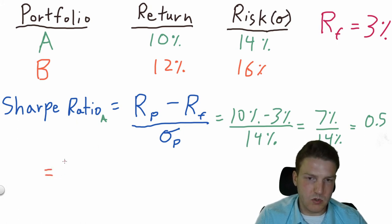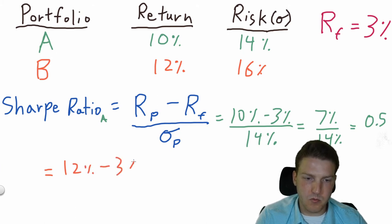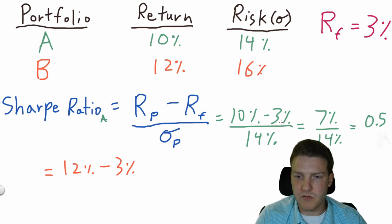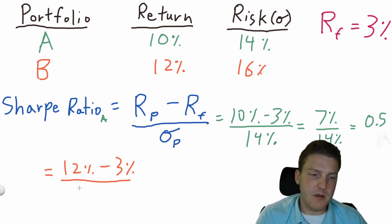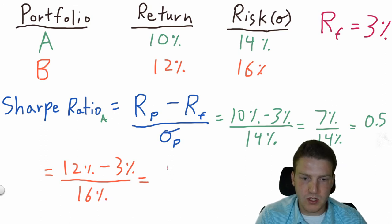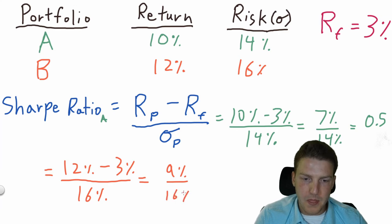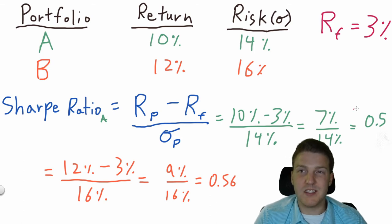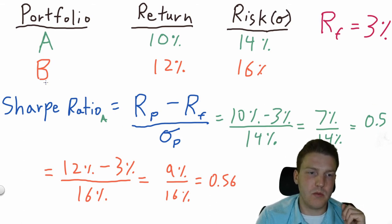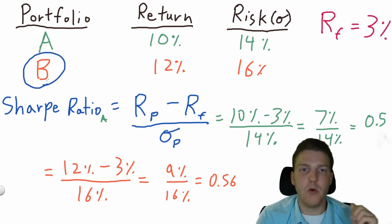For Portfolio B, we take the expected return of 12% and subtract the risk-free rate of 3% — the risk-free rate doesn't change between portfolios — then divide by the total risk of 16%. The excess return is 9%, giving a Sharpe ratio of 0.56. Because 0.56 is higher than 0.5, we prefer Portfolio B according to the Sharpe ratio.